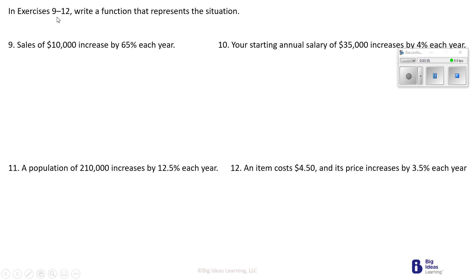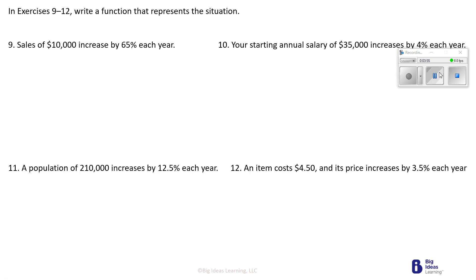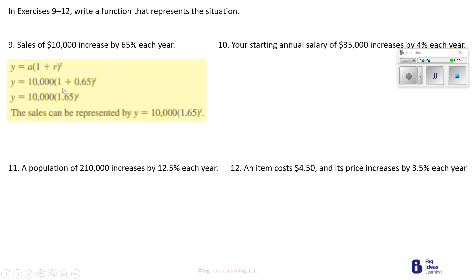Now we have problems 9 through 12. Number 9: sales of 10,000 increases by 65%. We write this function — move the decimal over twice to get 0.65. We've got Y equals A times 1 plus R. So 1 plus 0.65 gives us 1.65, and that's to the T power, multiplied to 10,000. The sales can be represented by Y equals 10,000 times 1.65 to the T power.